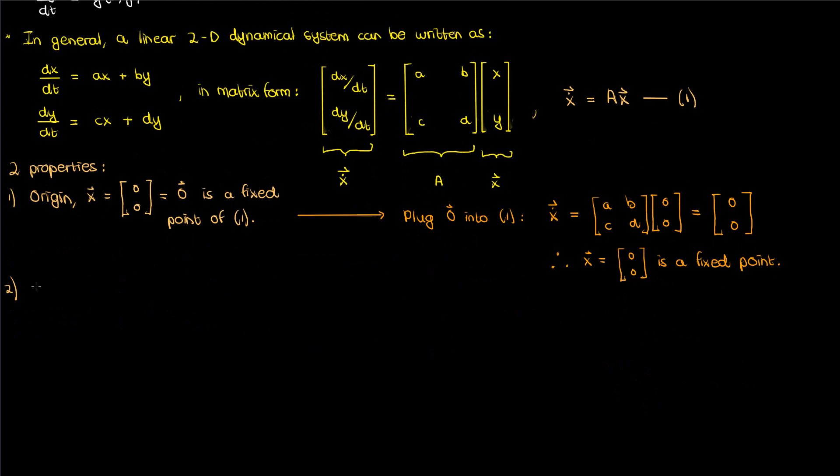The second property I'll talk about is that if the function vectors x1 and x2 are each solutions to my linear dynamical system, then their linear combination c1 x1 plus c2 x2, where c1 and c2 are constants, this linear combination must also be a solution.